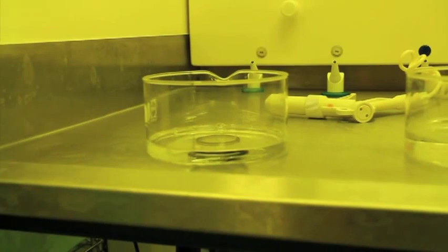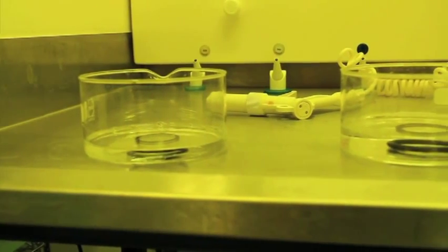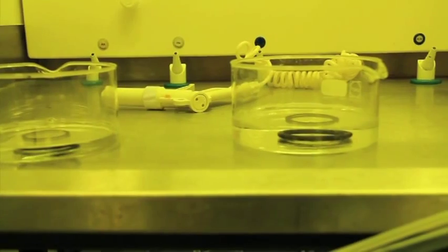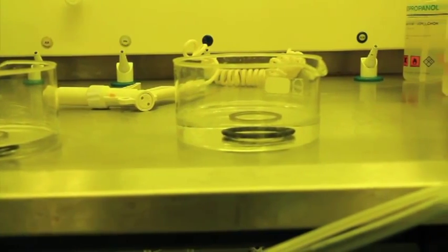Under the fume hood, set up three bowls: one with the photoresist developer, one with deionized water, and leave the third empty for rinsing the wafer with distilled water.